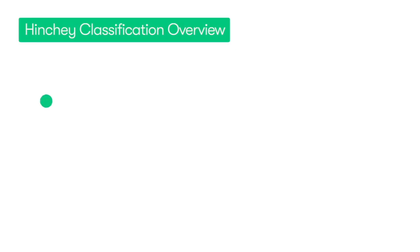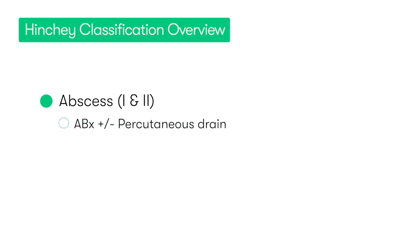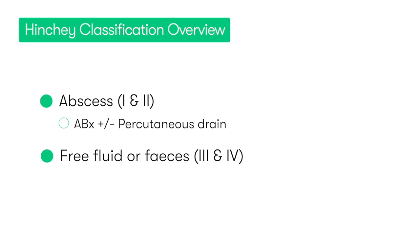To summarize: if the patient has an abscess, it's Hinchy 1 or 2, and we treat with IV antibiotics plus or minus percutaneous drainage. If the patient has free pus or free feces, it's Hinchy 3 or 4 respectively, and we treat with IV antibiotics and IV fluids. In Hinchy 3, if they're septic and fail to settle on non-operative management, they'll need surgery and a washout — either open or laparoscopically. In Hinchy 4, they need an emergency laparotomy.